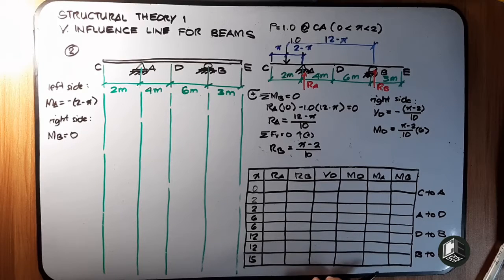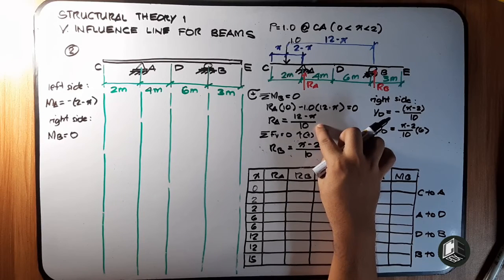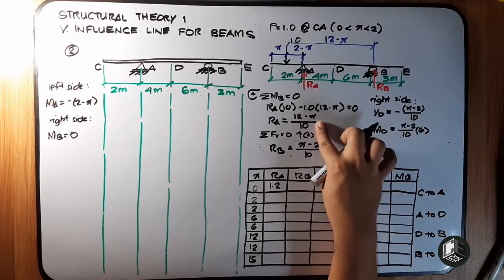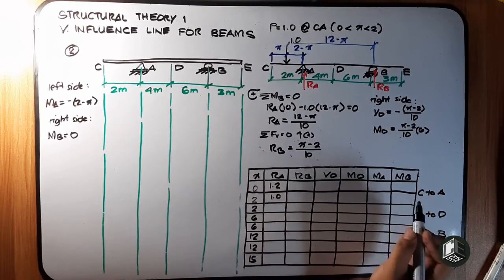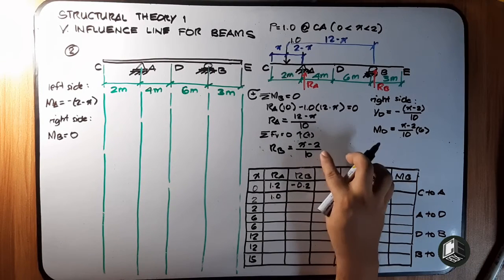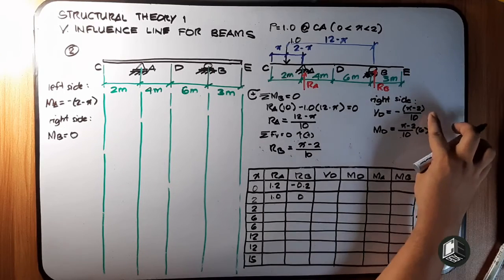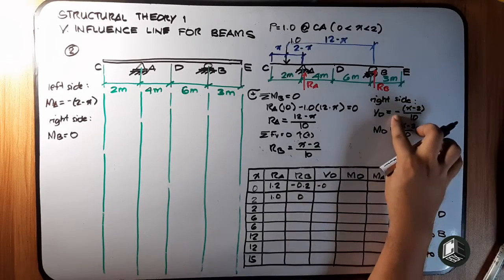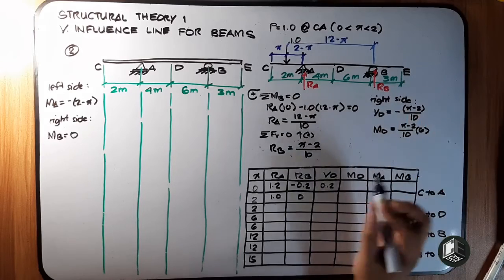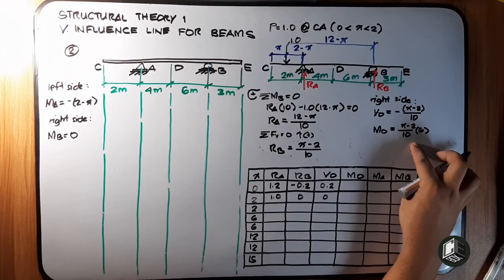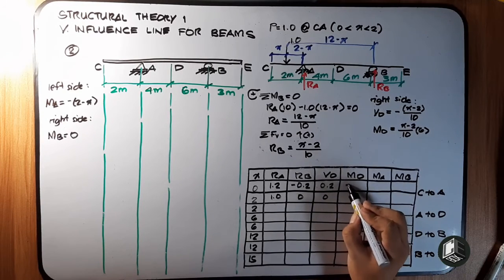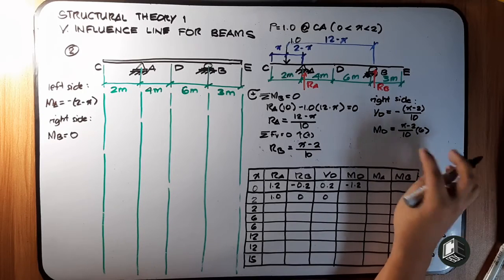Computing ordinates: For RA at X=0: (12 minus 0) over 10 = 1.2. At X=2: (12 minus 2) over 10 = 1.0. For RB at X=0: (0 minus 2) over 10 = negative 0.2. At X=2: (2 minus 2) over 10 = 0. Shear at D at X=0: negative (0 minus 2) over 10 = positive 0.2. At X=2: (2 minus 2) = 0. Moment at D at X=0: negative (0 minus 2) over 10 times 6 = negative 1.2.